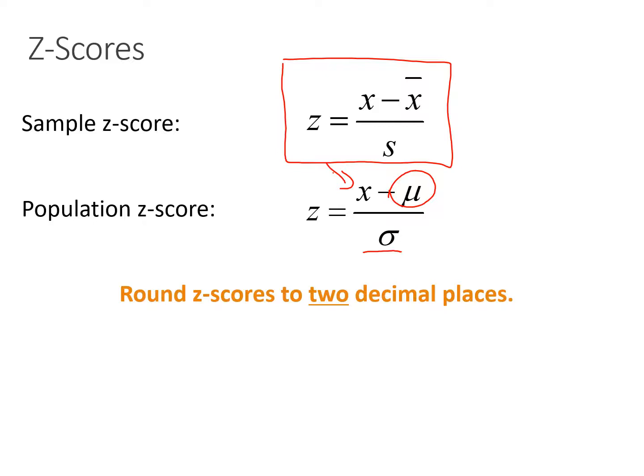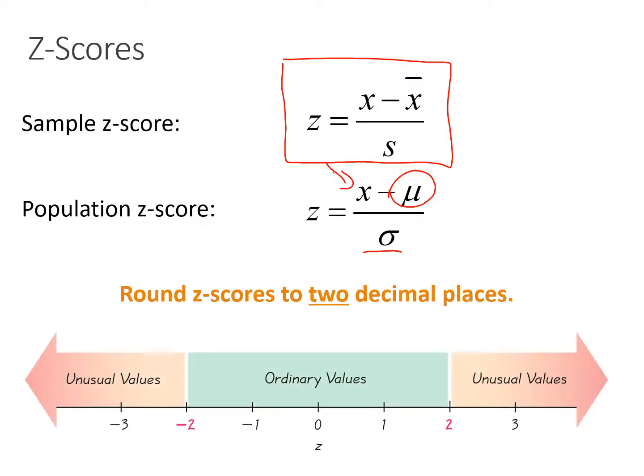Z-scores are always rounded to two decimal places. When we find a z-score, if it's anything larger than two, we're looking at a data value that's considered unusual. Remember, when we were looking at the empirical rule, 95% of our data values fall within two standard deviations of the mean. So once we pass a z-score of two, that's when we start to consider those values unusual.